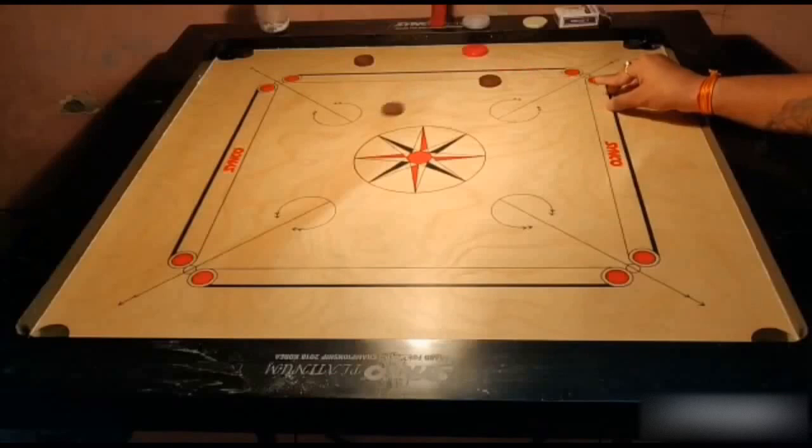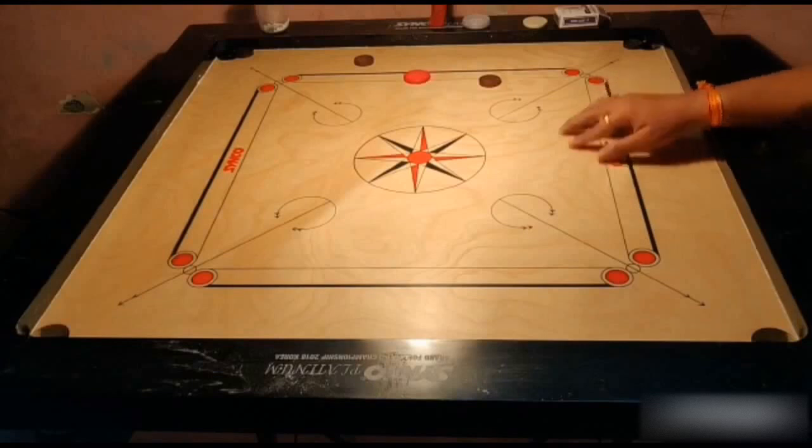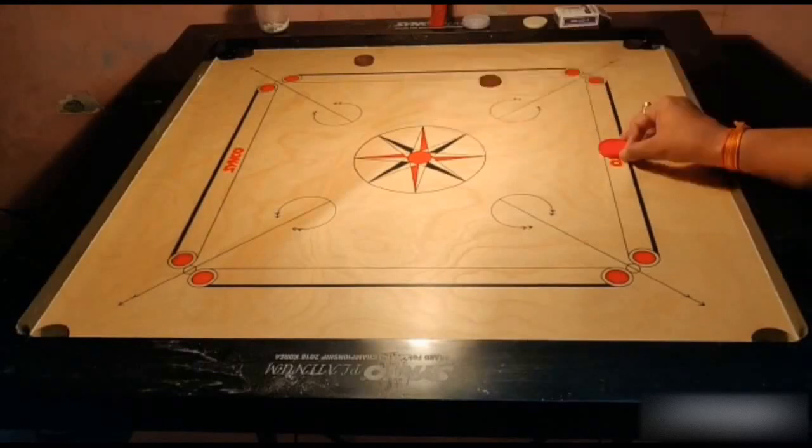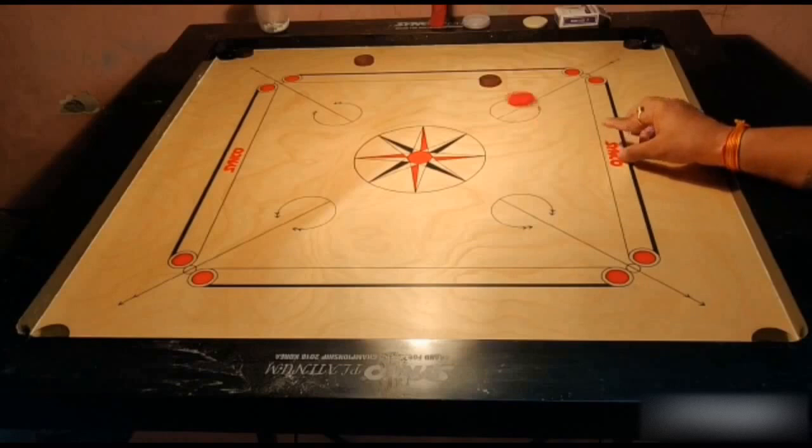Appreciate these two straight third pocket shots played by Vikas with extreme accuracy. Please observe that there is no flirting with the pocket frames and that the coins are heading exactly towards the center of the pocket. The difficulty level of the second shot is even higher as the striker is placed farther away from the coin.